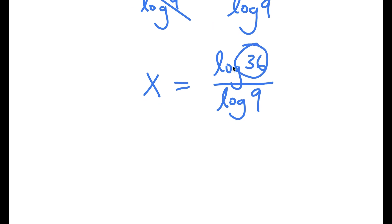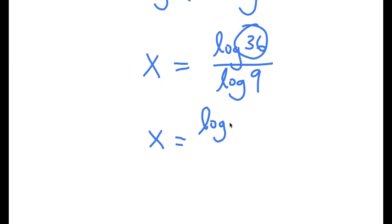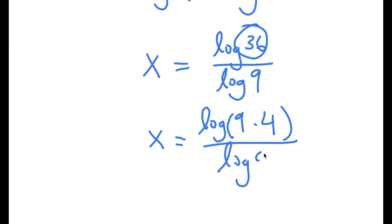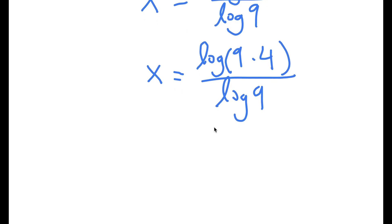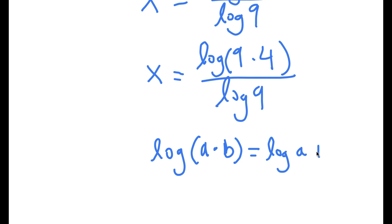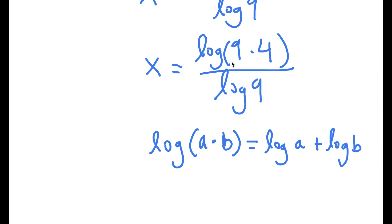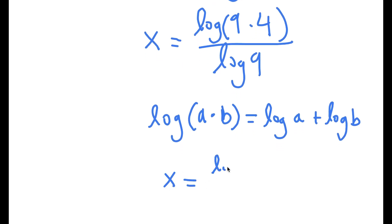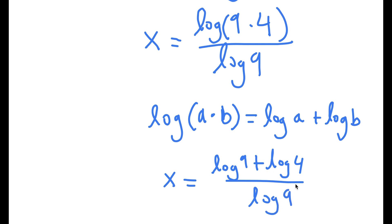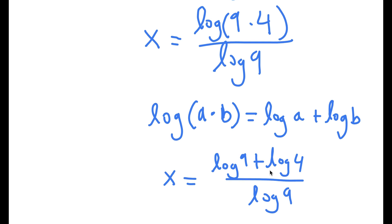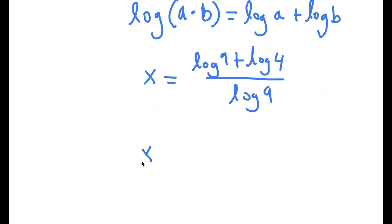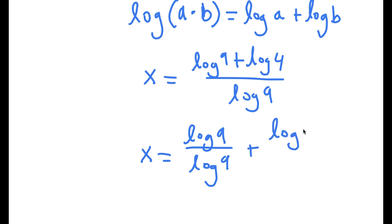Now log 36 we can rewrite as log of 9 times 4, and we have this over log 9. If I have something in the form log of a times b, this is the same thing as log a plus log b. So in this case, I have log 9 times 4, and I can rewrite that as log 9 plus log 4, over log 9. This is the same thing as log 9 over log 9 plus log 4 over log 9.